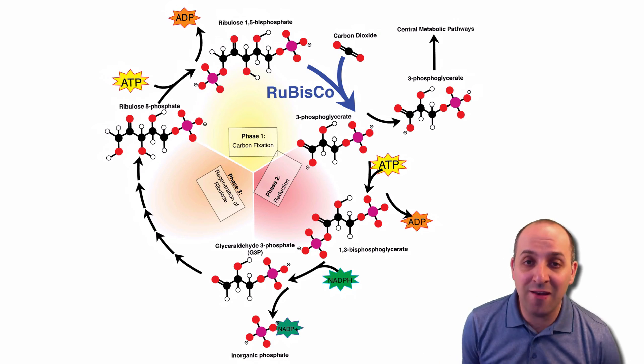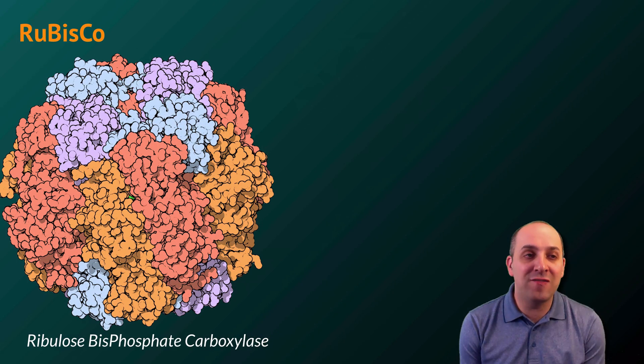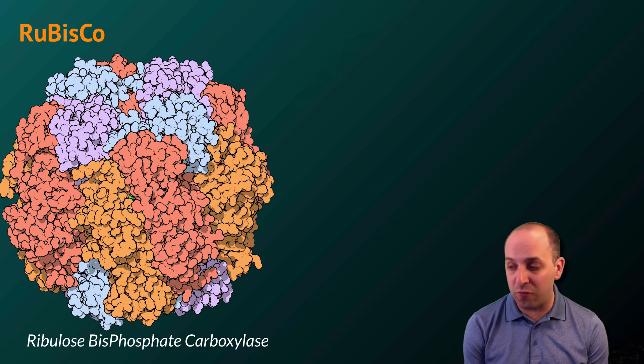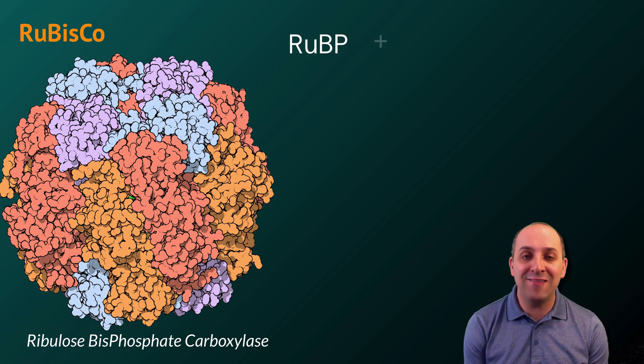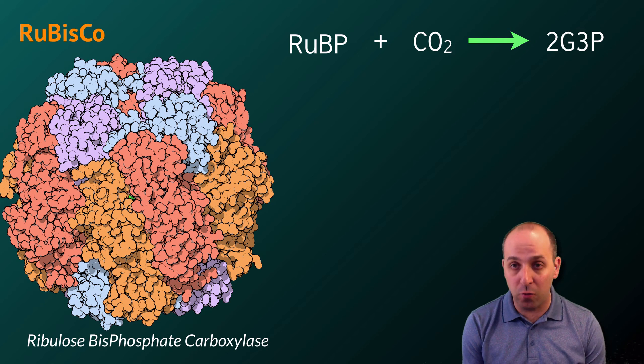This is the Calvin cycle and it's not something where you need to know the names of all the intermediaries or the enzymes that are involved with one exception. We're going to focus on the enzyme ribulose bisphosphate carboxylase, also known as RUBISCO. RUBISCO is the enzyme that carries out the initial step of carbon fixation, wherein a carbon dioxide is taken from the atmosphere and combined with the RUBP molecule.